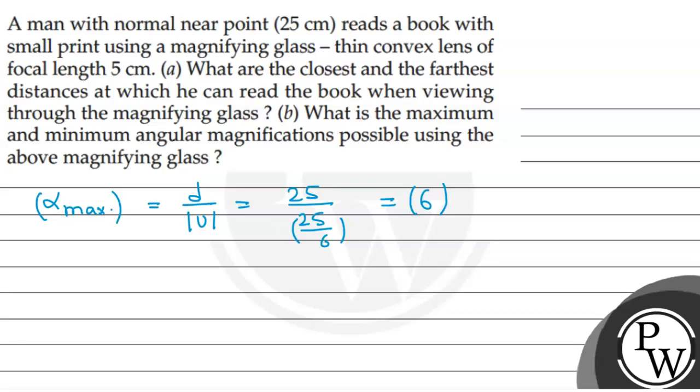Now, minimum angular magnification is given by this formula: D over U' dash, 25 over 5. This is equal to 5. So, maximum and minimum. This is the maximum, and this is the minimum.